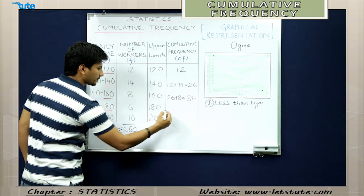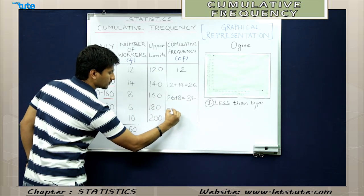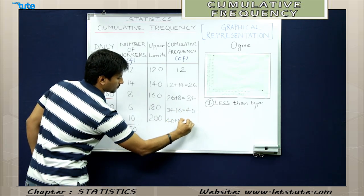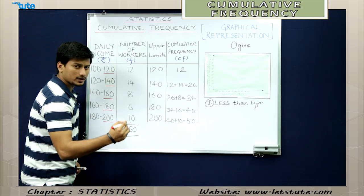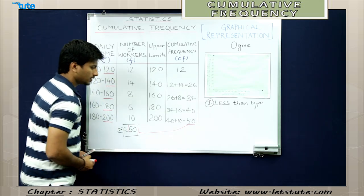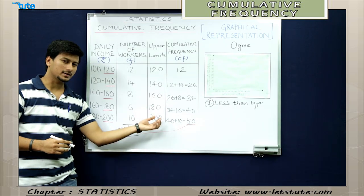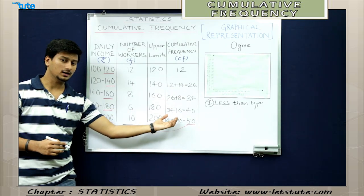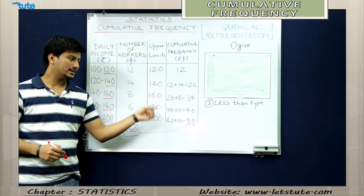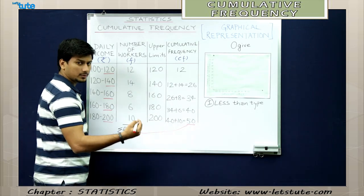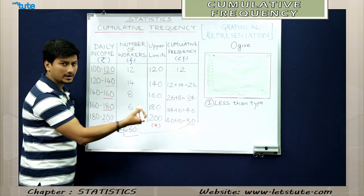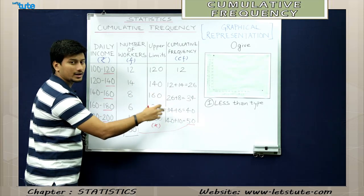We will do the same for all the groups. If you notice, the last running frequency actually matches the total frequency. After forming the columns for the upper limits and the cumulative frequency, we will represent it in a graph. Upper limits will be represented on the x-axis because it is an independent variable, whereas cumulative frequency is a dependent variable, so it will be located on the y-axis.